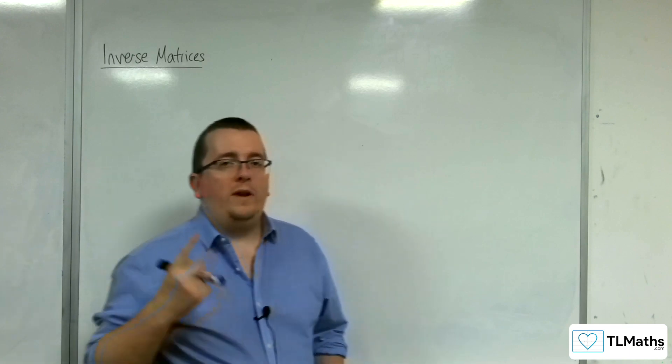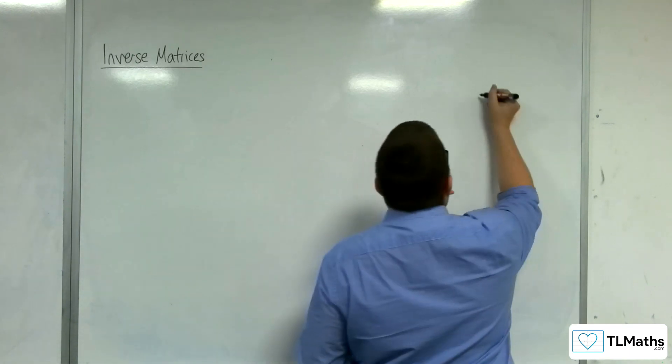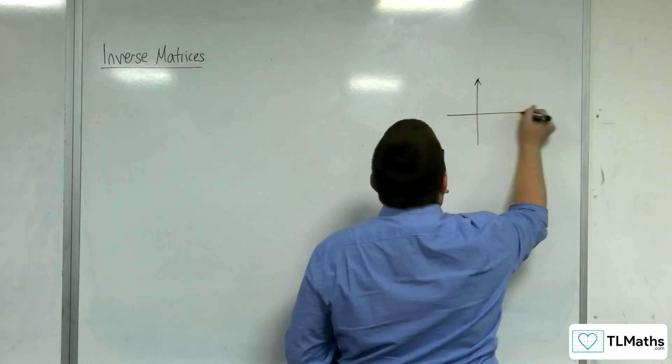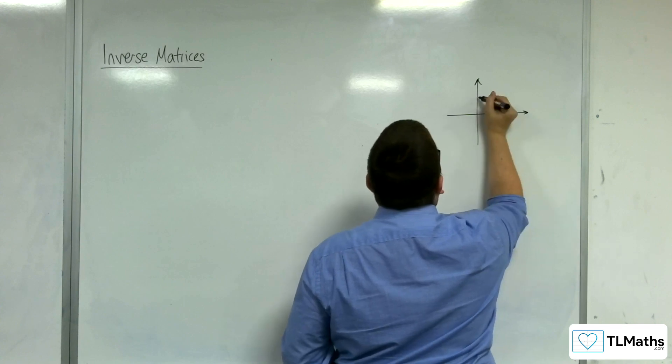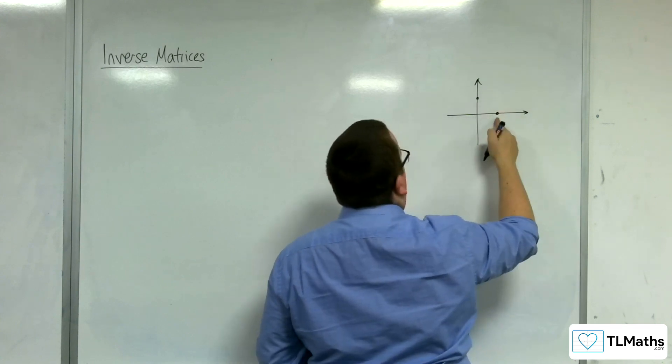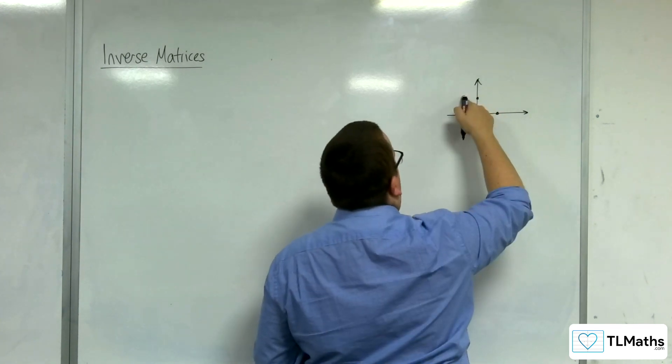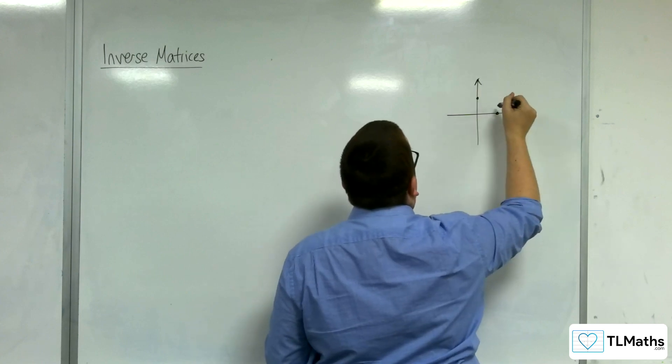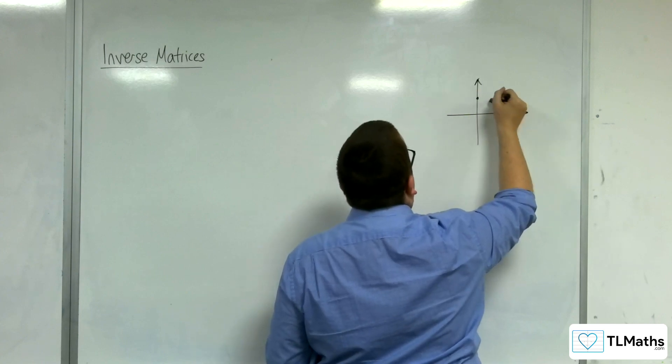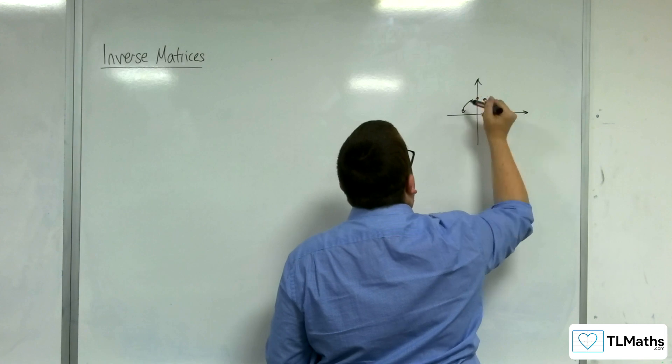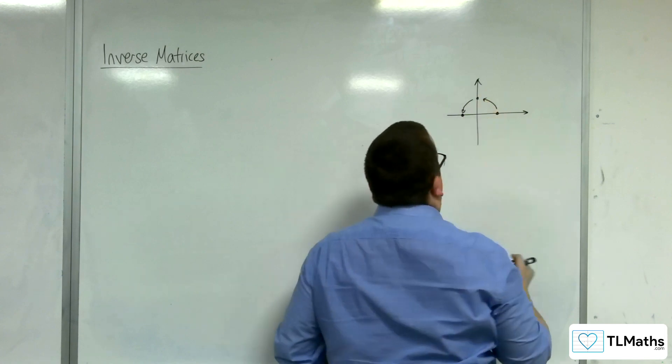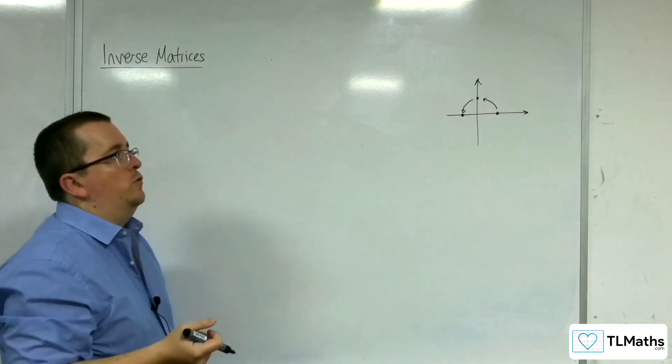OK, so let's say we had the matrix A, and what the matrix A did was it took our regular coordinates, 1, 0 and 0, 1, and let's say it rotated it anticlockwise 90 degrees to the left. So anticlockwise 90 degrees.